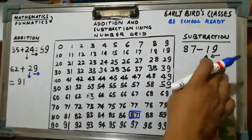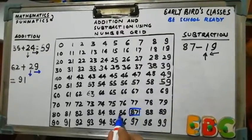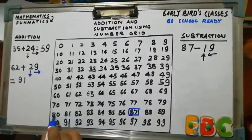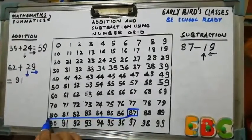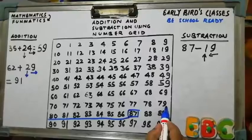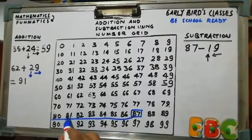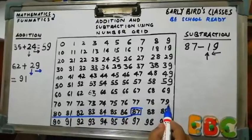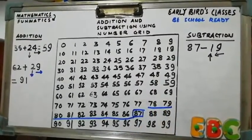And next step is we will move 9 places leftward. So 1, 2, 3, 4, 5, 6, 7, 8, and 9. We reached at 78.